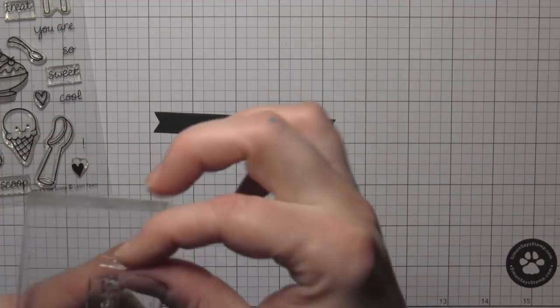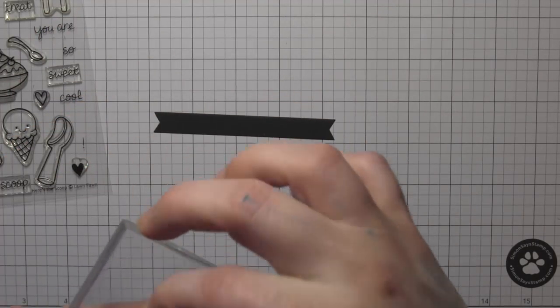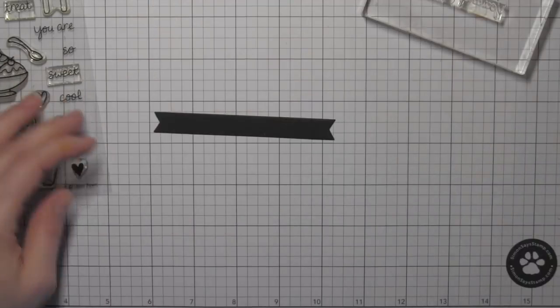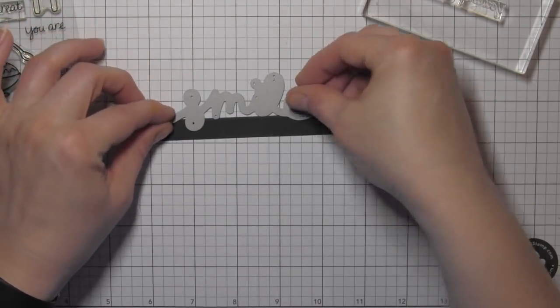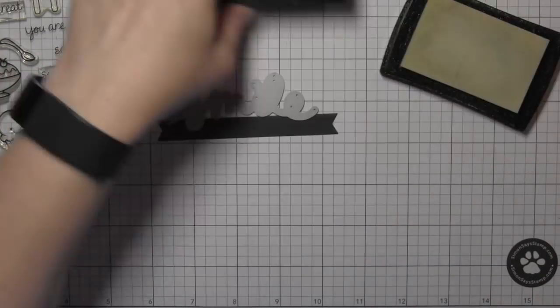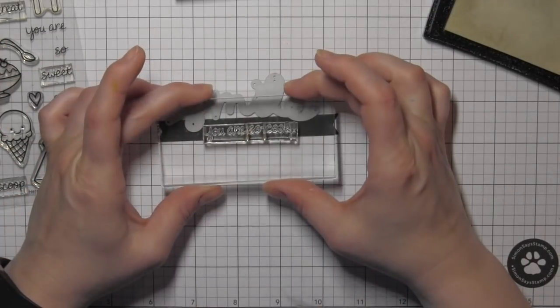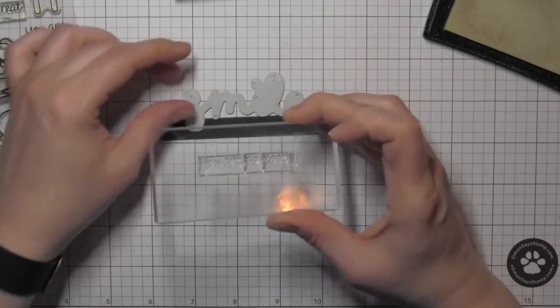I will stamp the greeting with some Versamark ink, and then I'm going to heat emboss it with the white embossing powder. And I'm using my scripty smile die just as a guide to make sure that everything's going to fit okay.